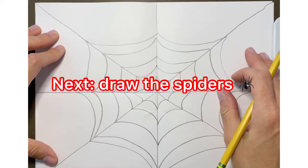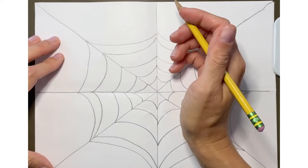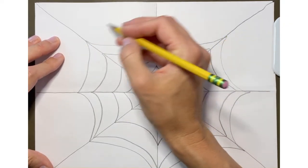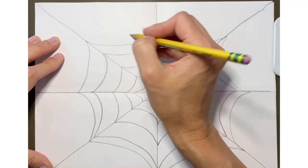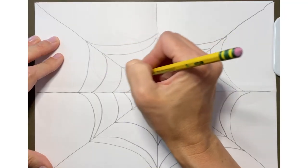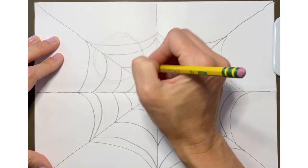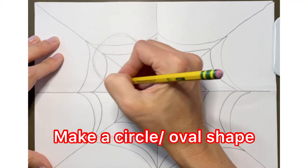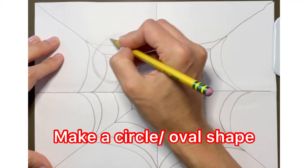Now that our spider web is done we're going to start working on our spider. So we're going to draw the bigger spider somewhere along here. Make a circle or more of an oval shape.